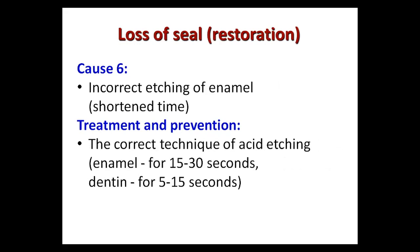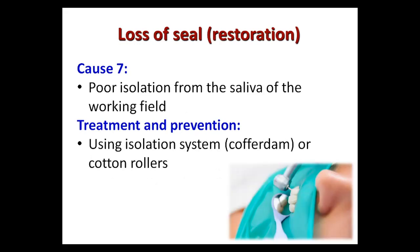Cause number six is incorrect etching of enamel, for example by shortening the etching time. Prevention involves using the correct technique of acid etching: 15 to 30 seconds for enamel and 5 to 15 seconds for dentin. Cause number seven is poor isolation from saliva of the working field. Prevention requires use of an isolation system.